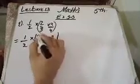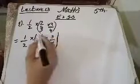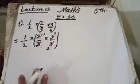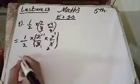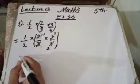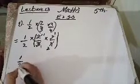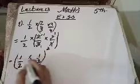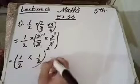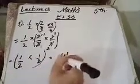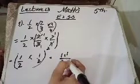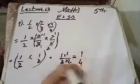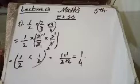अब आप देख सकते हैं कि ये question आपस में divisible है। 2 और 2 cut हो जाते हैं, 3 और 3 cut हो जाते हैं — इनको cut down कर दो, यह बिल्कुल simplify हो गया। हम लिखेंगे one by two multiply by one by two, तो जवाब आएगा one over four। यही हमारा answer है।